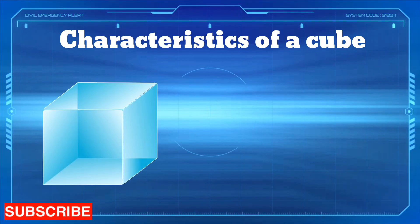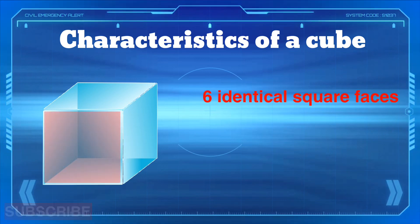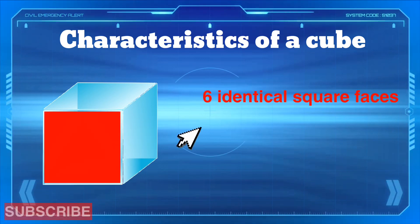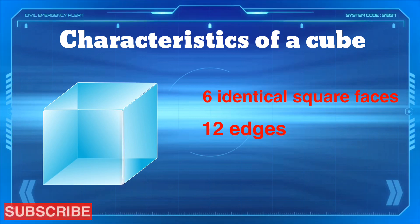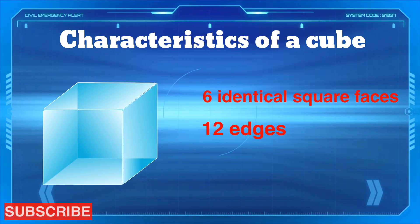Characteristics of a cube. A cube has six identical square faces, twelve edges, and eight vertices.